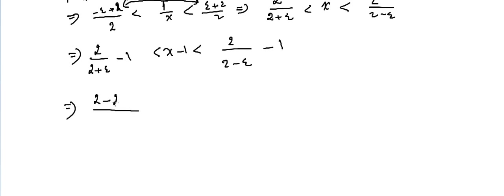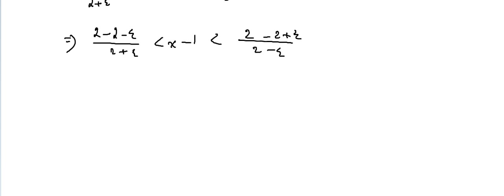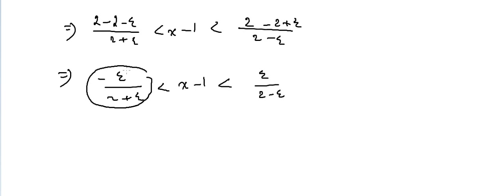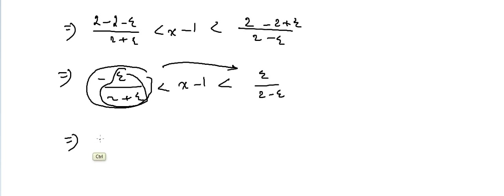Using a common denominator, this simplifies to: (2 minus 2 minus epsilon) over (2 plus epsilon) less than X minus 1 less than (2 minus 2 plus epsilon) over (2 minus epsilon), which gives minus epsilon over (2 plus epsilon) less than X minus 1 less than epsilon over (2 minus epsilon).